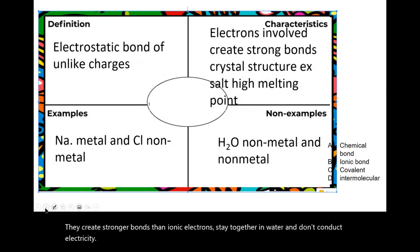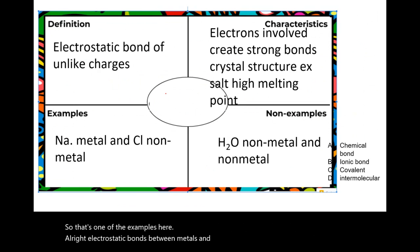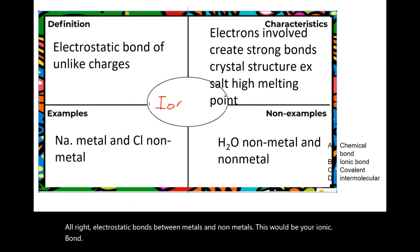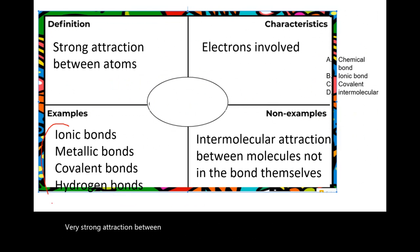Electrostatic bonds between metals and nonmetals create your ionic bond. There is a very strong attraction between atoms. This is talking about everything under the umbrella of chemical bonds — covalent, metallic, and others.